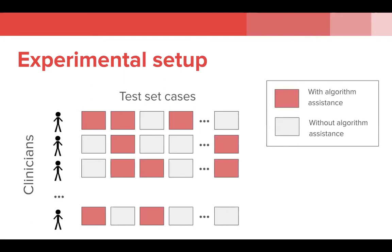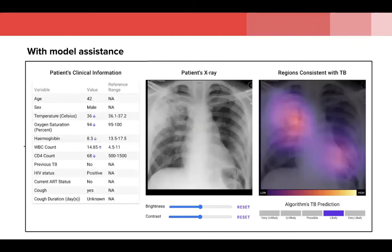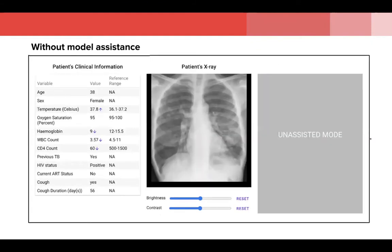In the assisted mode, clinicians could see the CAM along with a scale showing the algorithm's prediction of the likelihood that the patient has TB. In the unassisted mode, there was no CAM nor a likelihood score from the algorithm — all they had was the raw clinical information and the patient's chest x-ray. The diagnostic accuracy of assisted physicians compared with the algorithm alone was also assessed using a logistic mixed effects model.